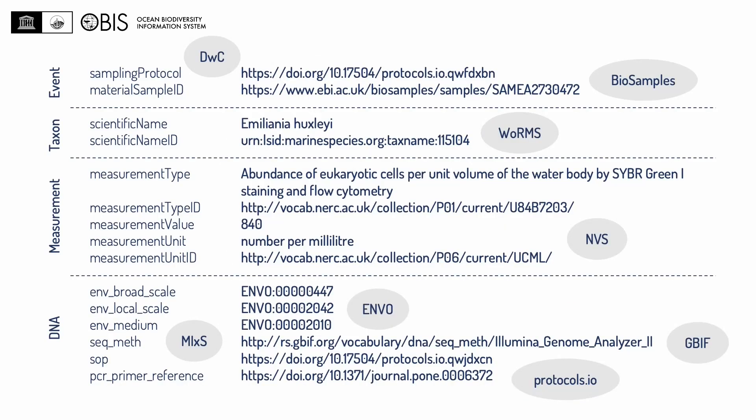So how does this work in practice? This is an example of a set of fields — in fact just a small subset — that could be associated with a biodiversity record. We have some properties related to the sampling event and sample, properties related to taxonomy, properties of measurements, and fields related to DNA sequencing. The fields we use are from two standards: Darwin Core and MIxS.